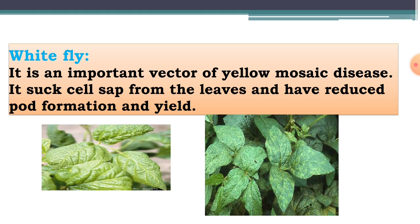The next pest is the white fly. It is an important vector of yellow mosaic disease. Yellow mosaic disease is transmitted from one plant to another by the white fly. This pest sucks the cell sap from the leaves and stem, causing reduced pore formation and reduced yield. Ultimately, due to reduced flowers or pods, the yield is reduced. This is the nature of damage of the white fly pest.